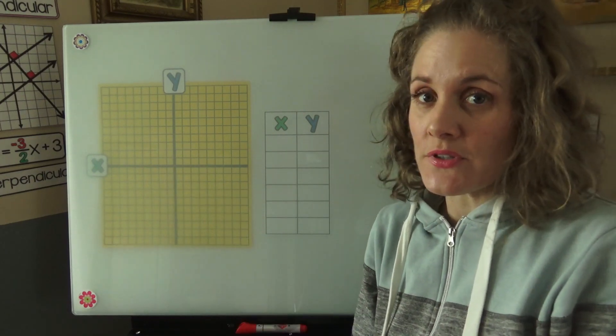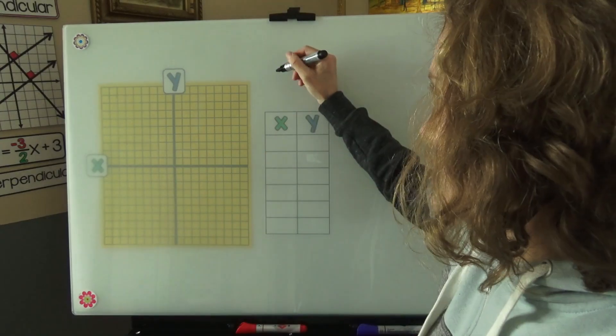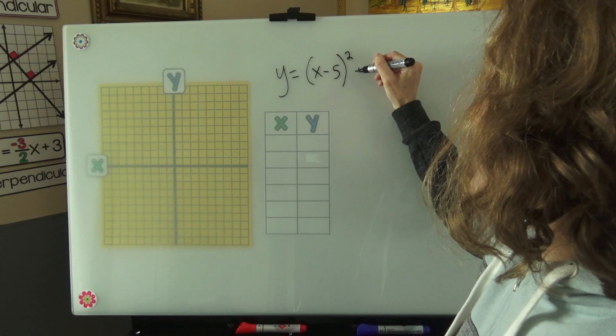I have a graph set up and a table set up, and I'm just going to make up a quadratic for us to graph. So how about y equals x minus 5 squared plus 3.